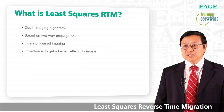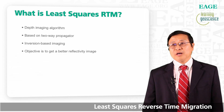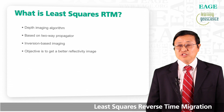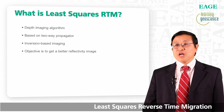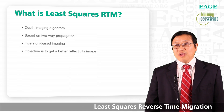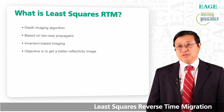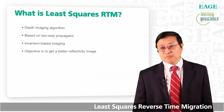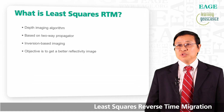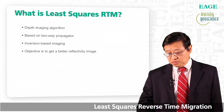What is least squares RTM? Simply speaking, least squares RTM is a depth imaging algorithm. As the name implies, it is based on the two-way wave equation. But unlike the conventional RTM, which is an adjoint operator and is not inverse, least squares RTM is an inversion-based imaging algorithm. The main objective of least squares RTM is to get a better reflectivity image.